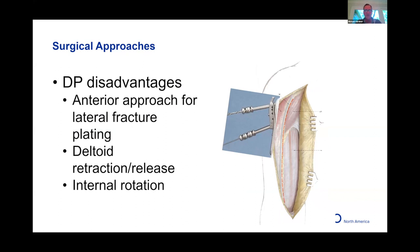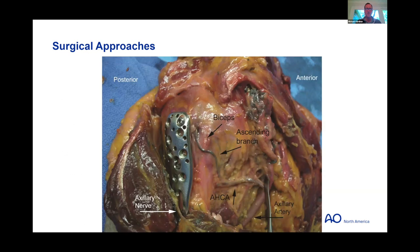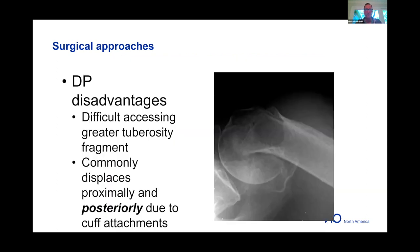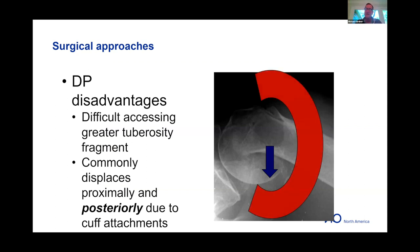Another problem with the deltopectoral approach: this vascular injection study on an intact shoulder reminds us that one of the main blood supplies to the humeral head — the ascending branch in the bicipital groove — runs right on the anterior proximal humerus. Accessing the greater tuberosity is also hard, as it retracts posteriorly and superiorly; the deltoid muscle mass can make it difficult to get around and access the greater tuberosity fragment.